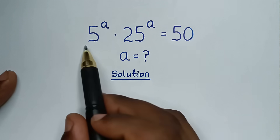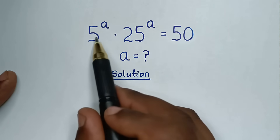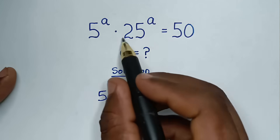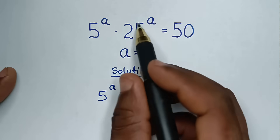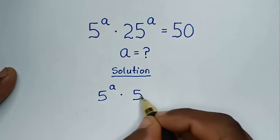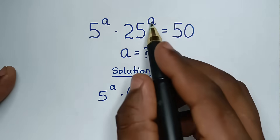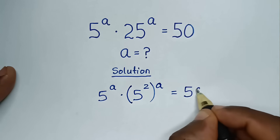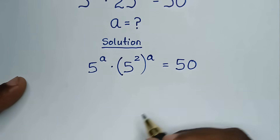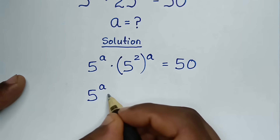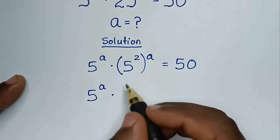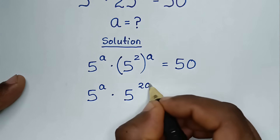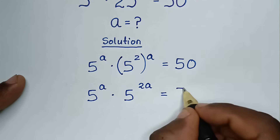In the first step, from this part here, it will be 5 power a times 25 power a. Since 25 is the same as 5 squared, we write 5 power a times (5 squared) power a, which gives 5 power a times 5 power 2a, is equal to 50.